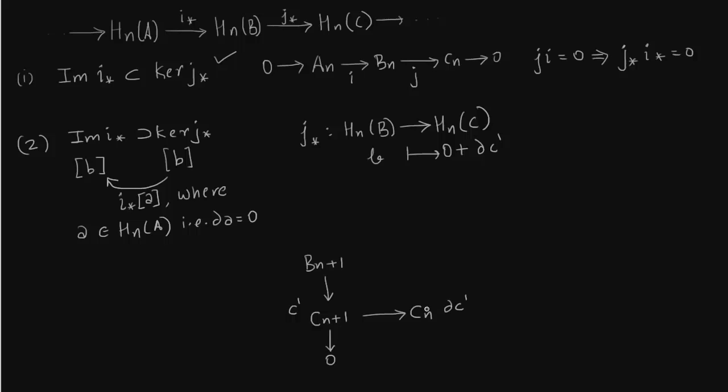So now let us complete this diagram. We go from B_{n+1} to Bn and Bn gets mapped to Cn. So let us write down this element b in Bn also which got mapped to δc'.